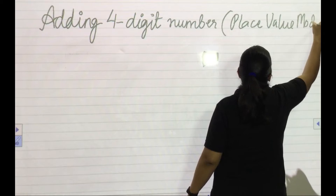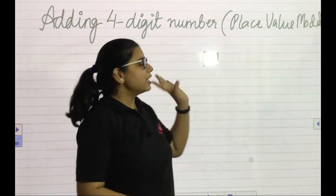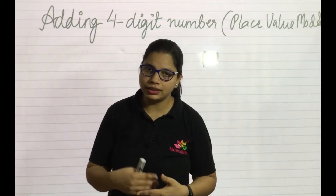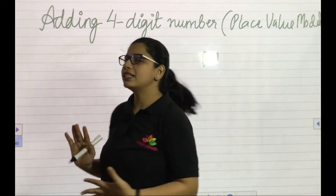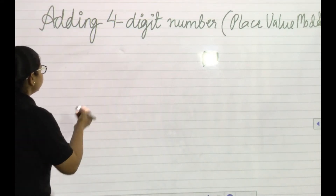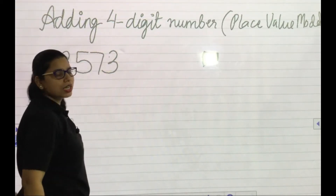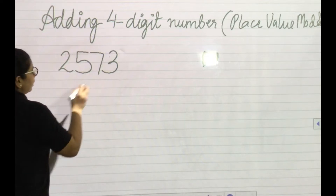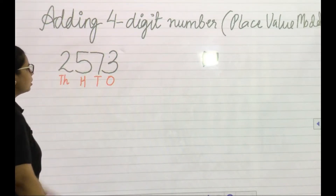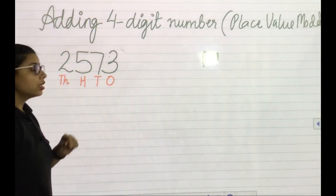Before this, we have already done place value model. With the help of place value model, we have learned adding two-digit numbers and three-digit numbers. Now it's time for four-digit numbers. A four-digit number — let's say for example 2573 — has four places: the rightmost is ones, then tens, hundreds, and thousands.